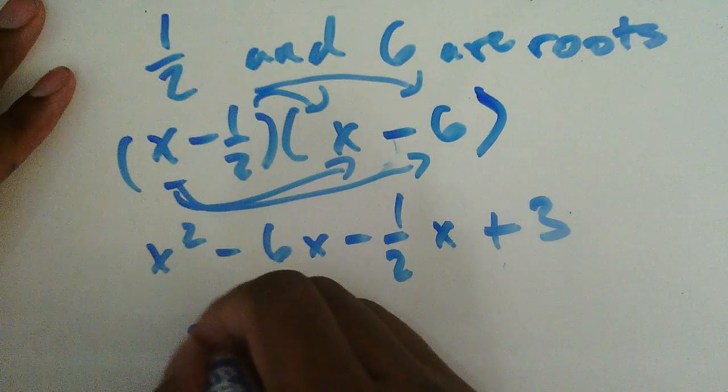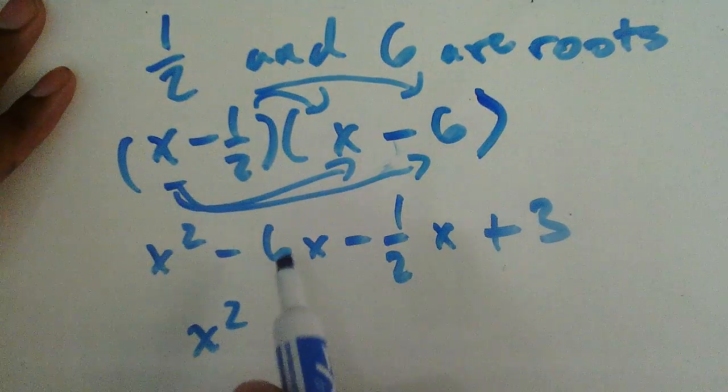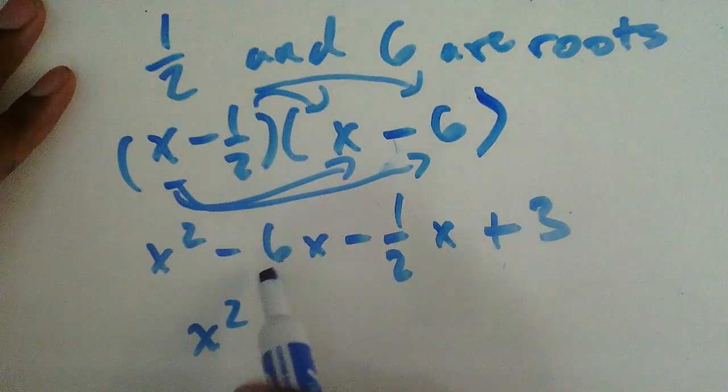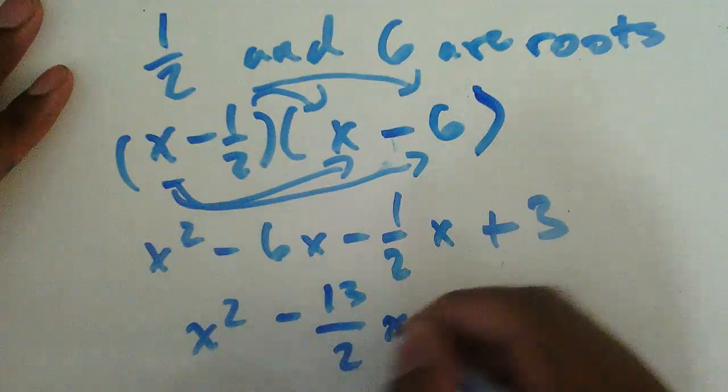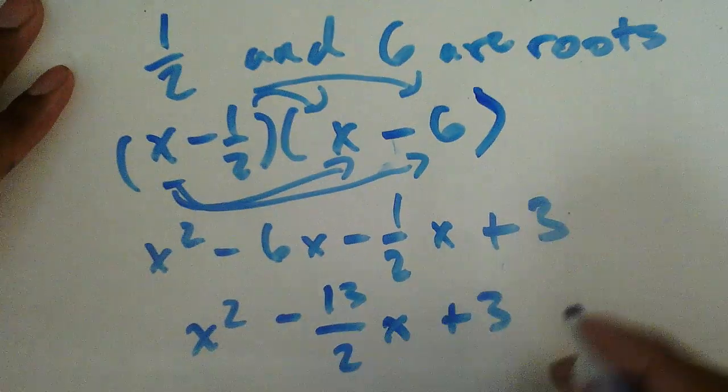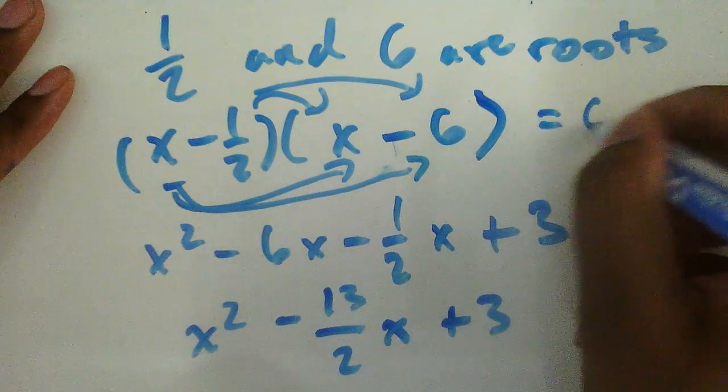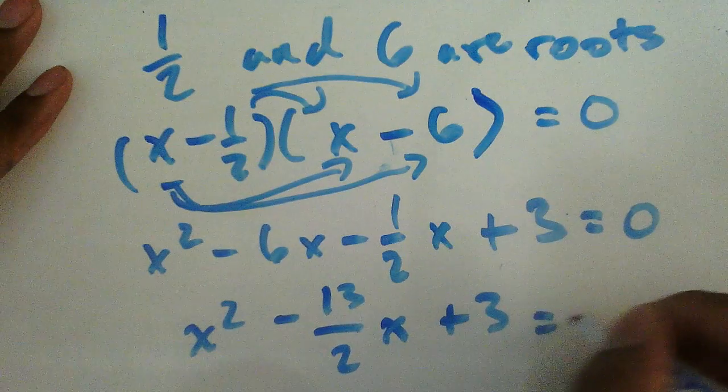Combine like terms. I'll end up with x squared. Six is the same thing as 12 over two, so minus 13 over two x plus three. And I keep forgetting equals zero. Should have equals zero over here.